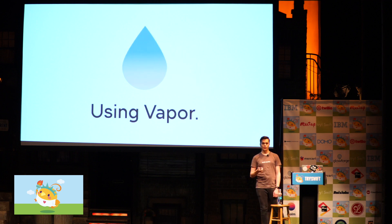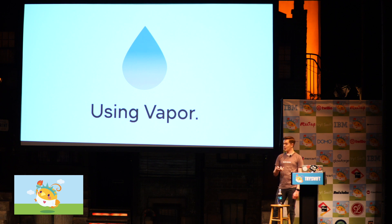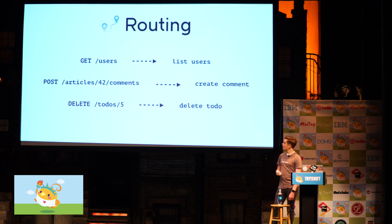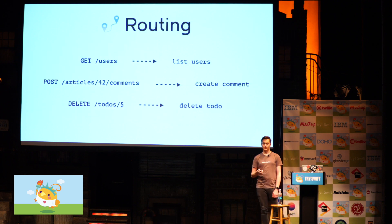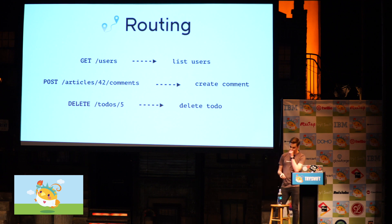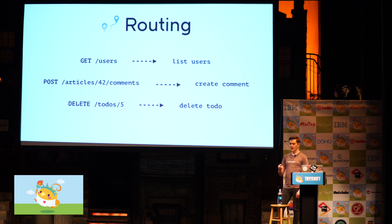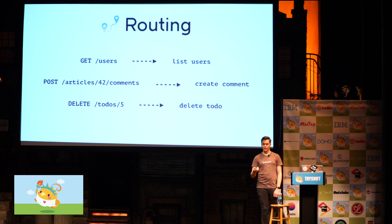So now, what does it look like to use Vapor? I want to show you some new APIs still in alpha development. Something you'll do very commonly in Vapor is routing — basically taking identifying information from an HTTP request and routing it to your business logic. For example, a GET request to /users should return a list of users — standard RESTful practice. A POST to /article/42/comments should create a comment for Article 42.